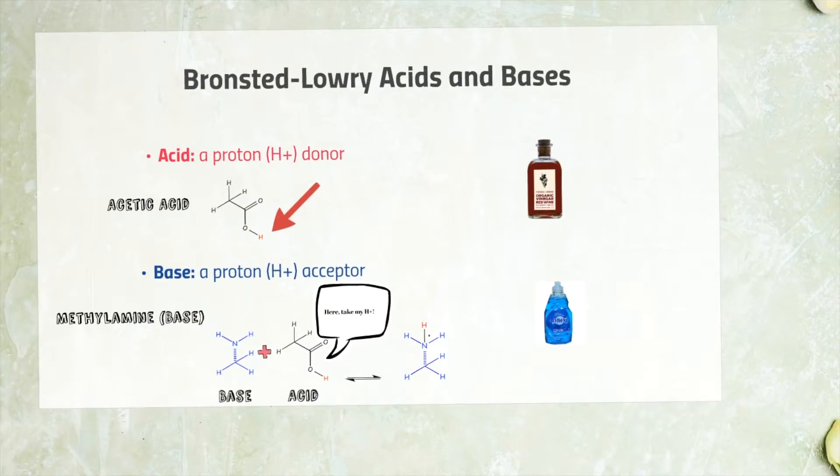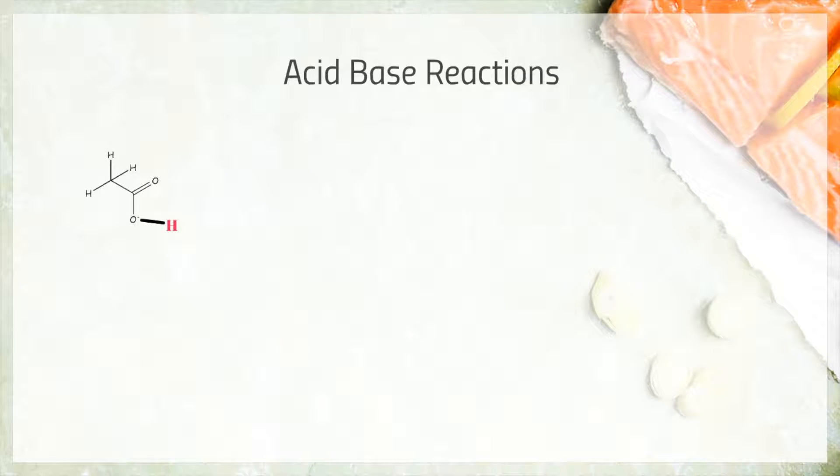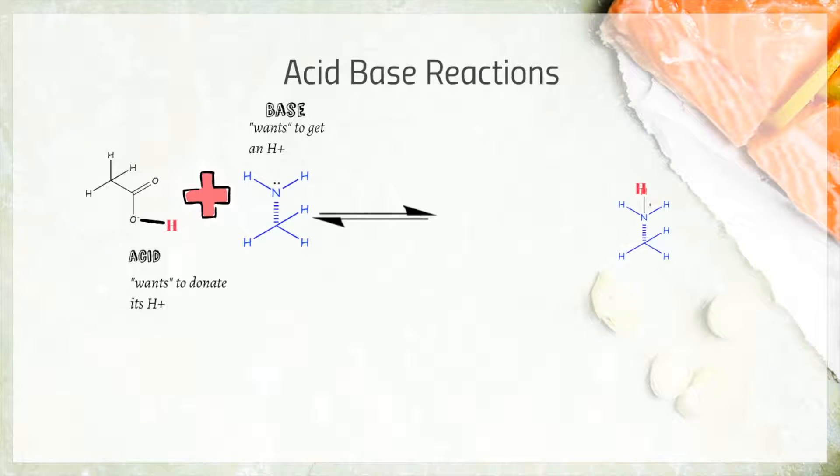Let's take a closer look at what happens in an acid-base reaction and review some of the terminology that's often used with Bronsted-Lowry theory. When an acid or a proton donor reacts with a base which wants to accept that proton, the reaction will reach a new equilibrium. The compound that was a base will gain a proton and now become its conjugate acid.